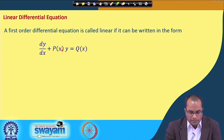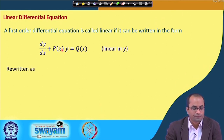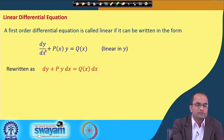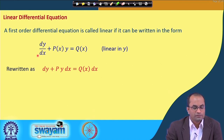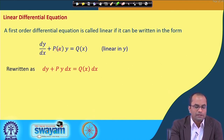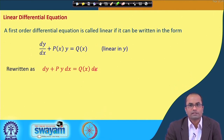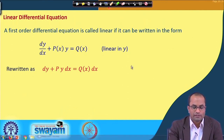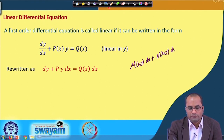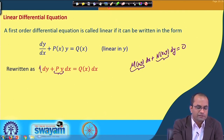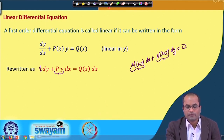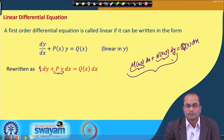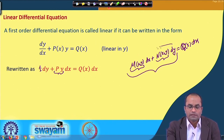This is the general form of first-order linear equation. We can rewrite it by multiplying through by dx to get dy + P·y·dx = Q(x)dx. This is now in the form M(x,y)dx + N(x,y)dy = 0, where M = P·y + (right-hand side) and N = 1. The key question is whether we can find an integrating factor for this equation.